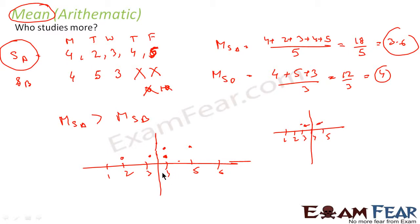Central tendency is nothing but where the center of the data lies. Mean is calculated by adding all the numbers and dividing by the count. From the mean we found who studies more. This is a practical implementation of mean — when you have a large bunch of data and are confused, you can use mean to make a decision. Our interpretation here is that Student B's mean is higher, so Student B studies more. This is how we use statistics.